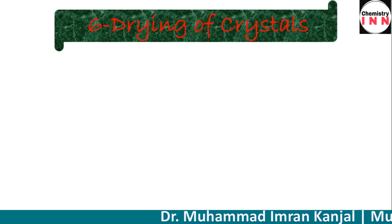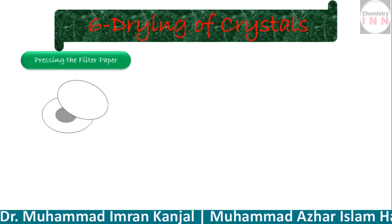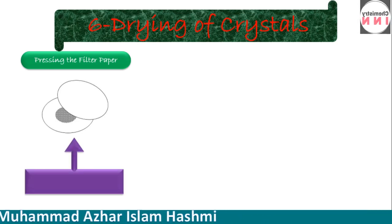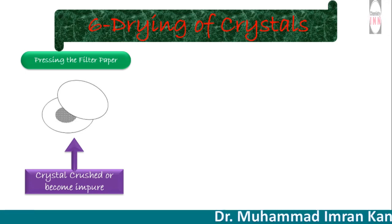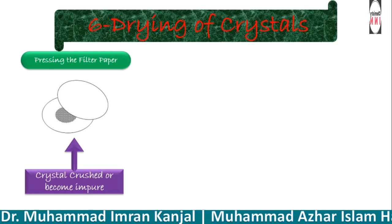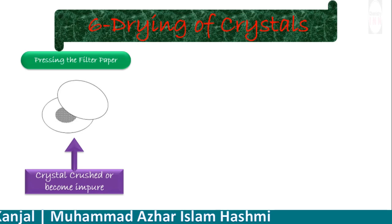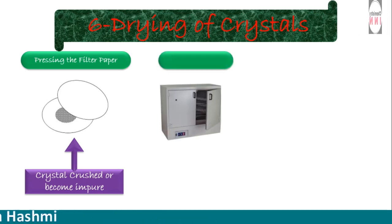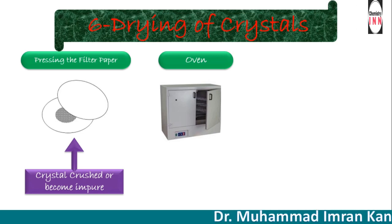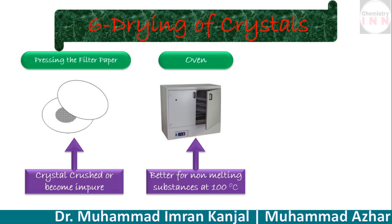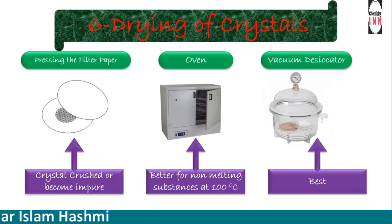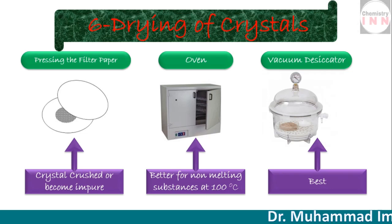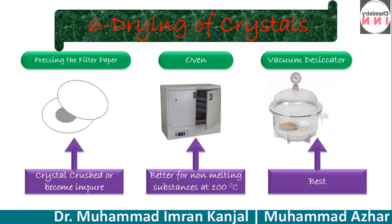The last step of crystallization is to dry the wet crystals. Crystals can be dried in three ways. First, pressing the crystals between filter paper — but this may cause impurities from the paper fibers, and the crystals may be crushed, which is a major drawback. Second, drying in an oven — suitable only for substances that do not melt at 100 degrees centigrade. Third, using a vacuum desiccator, which is one of the best methods.